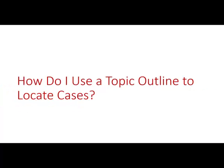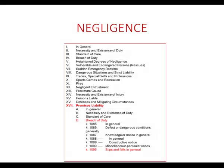Last but not least, let's talk about using a detailed topic outline to find cases in the topic and key number system. If you know the topic that you're interested in, you can go directly to the detailed topic outline located at the beginning of each digest topic to locate the key numbers most relevant to your search. Looking through the outline can be helpful in clarifying issues or raising concerns you hadn't thought of. But handle this approach with care — it can be time-consuming and confusing, especially if you don't already have a basic background in a given legal area. On the flip side, this is actually the technique that seasoned practitioners use.